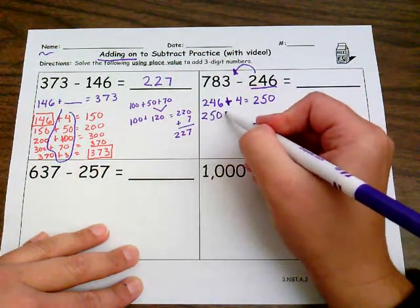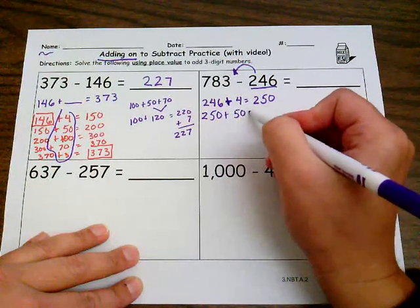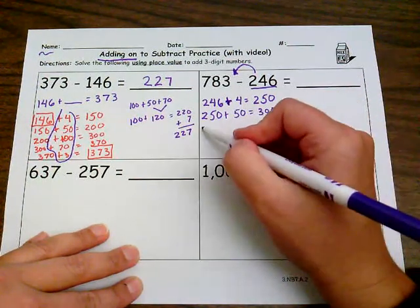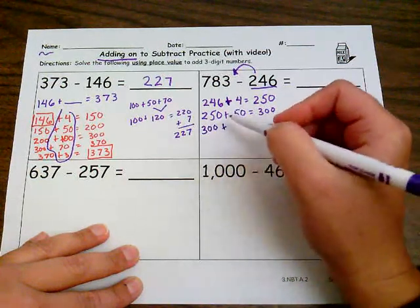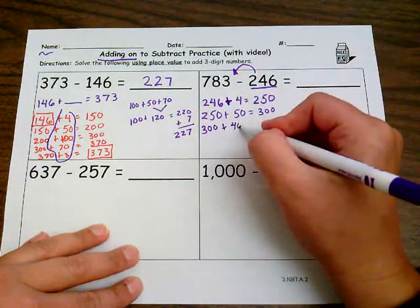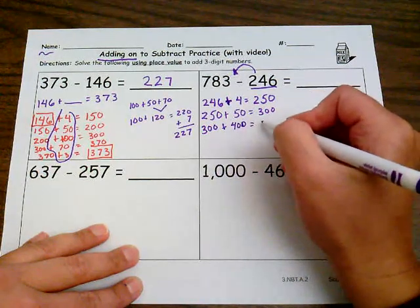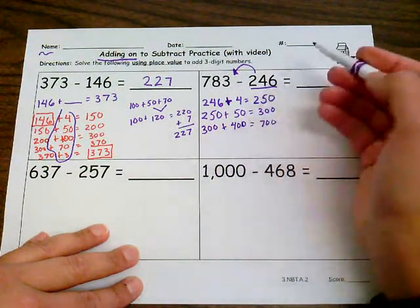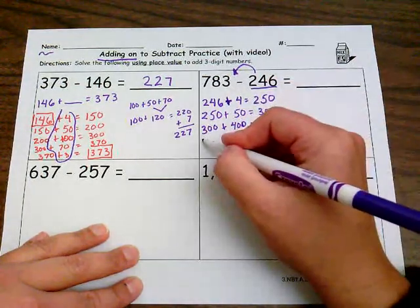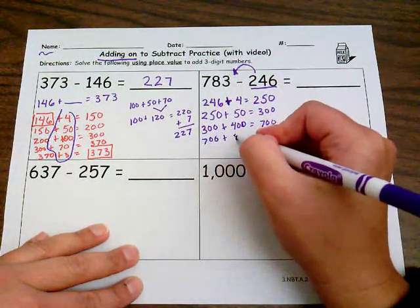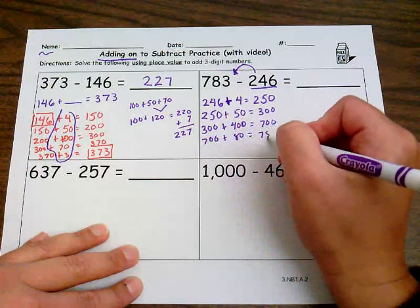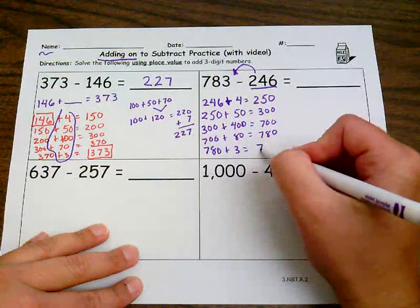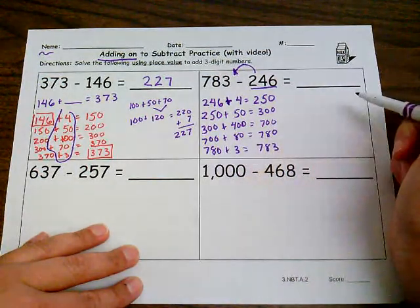So let's go ahead and start. The first thing I'm going to do is add on some ones. So I know if I add four ones, it'll bring me to 250. Now that I've done my ones, I want to add on some tens. I'm going to add 50 to get to 300. And now I need to add on some hundreds. So 300 to get to 700, I'm going to need 400 more. I need 80 more to get to that 780 mark.